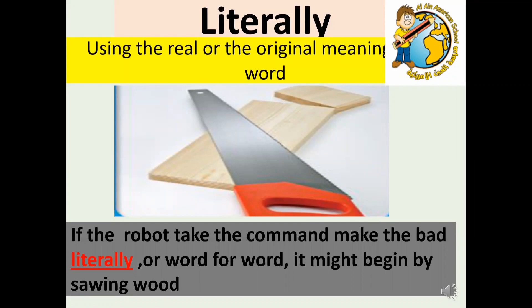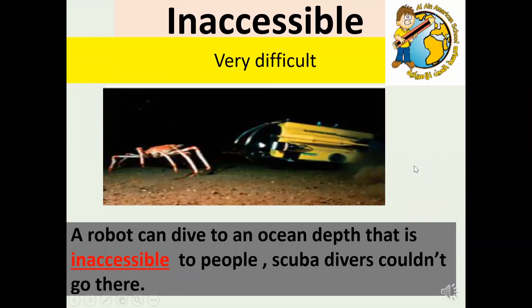9. Literally. If a robot took the command 'Make the bed' literally, or word for word, it might begin sawing wood for a frame. 10. Inaccessible. A robot can dive to an ocean depth that is inaccessible to people — scuba divers could not go there.